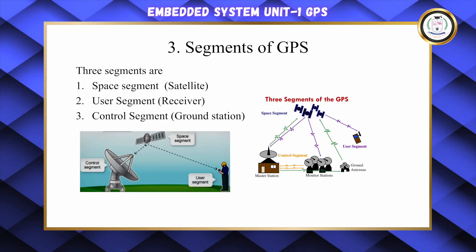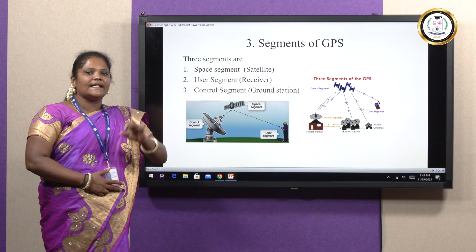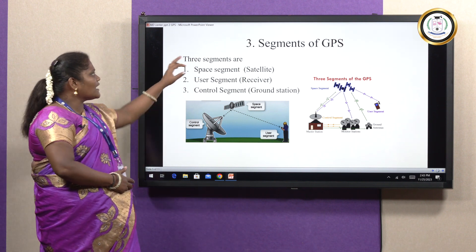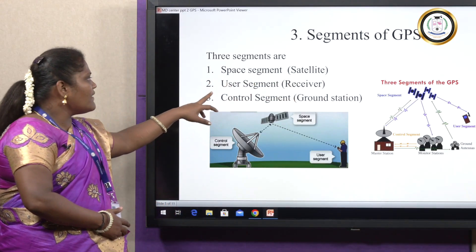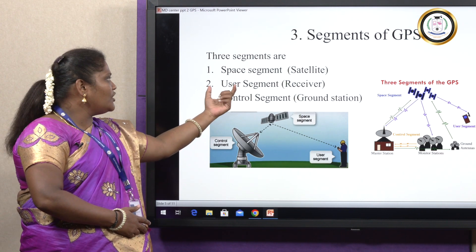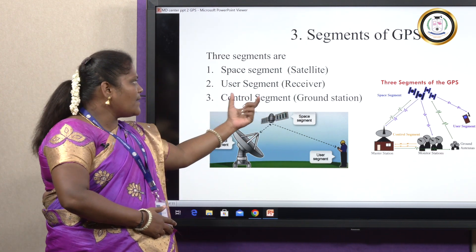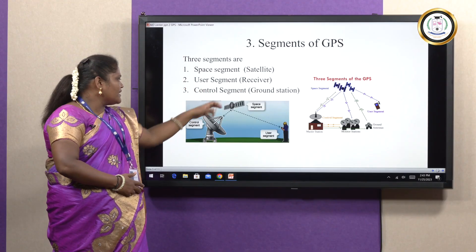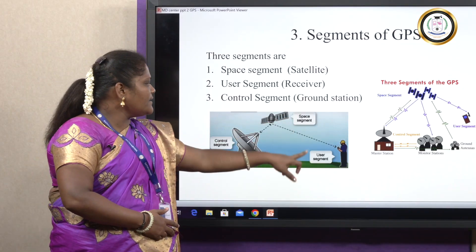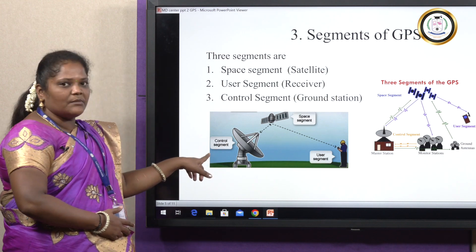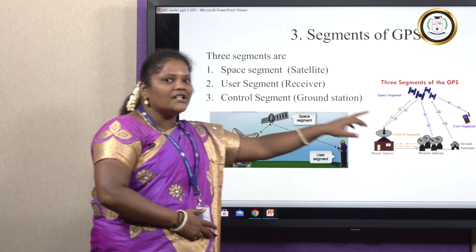There are three segments of GPS. First is the space segment — that is, the satellite. Second is the user segment — the user, meaning the receiver. Third is the control segment, which is nothing but the ground station. These are the three important segments of GPS.